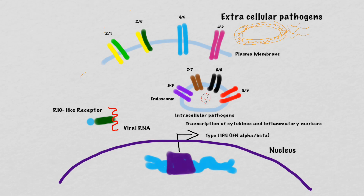TLRs, while the most important, aren't the only game in town. There are also NOD-like receptors and RIG-like receptors, which recognize pathogens within the cytoplasm of the cell. RIG-like receptors in particular recognize viral RNA of RNA viruses that replicated in the cytoplasm. This leads to production of a new set of cytokines — the type 1 interferons, known as interferon alpha and interferon beta.